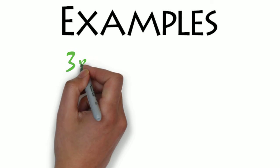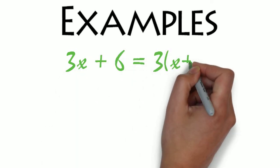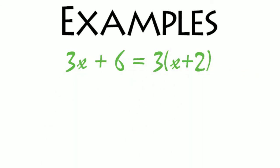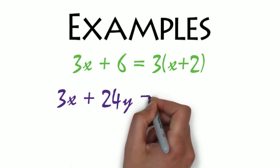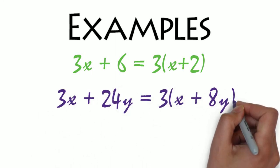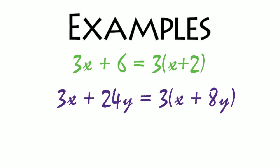For example, 3x plus 6 can be written as 3 times x plus 2, or writing 3x plus 24 as 3 times the quantity x plus 8y.